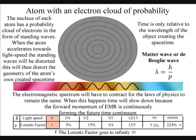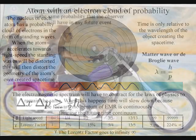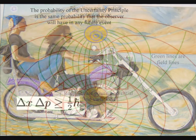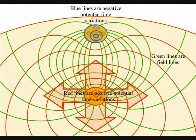The probability of the uncertainty principle is the same probability that the observer will have with any future event. It is because the atoms can distort the geometry of space-time that we have electromagnetic fields.